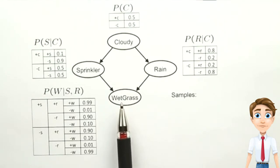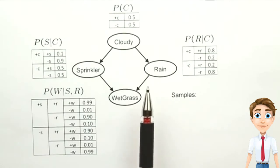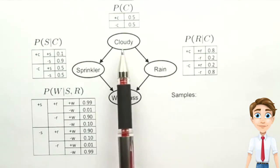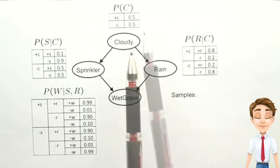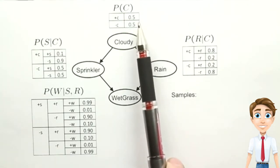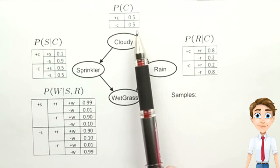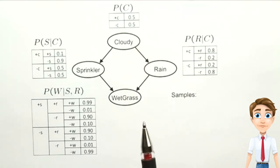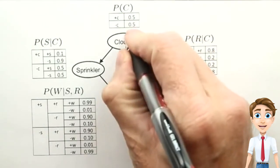Now, to do inference over this network using sampling, we start off with a variable where all the parents are defined. In this case, there's only one such variable, cloudy. And its conditional probability table tells us that the probability is 50% for cloudy and 50% for not cloudy, and so we sample from that. We generate a random number, and let's say it comes up with positive for cloudy.